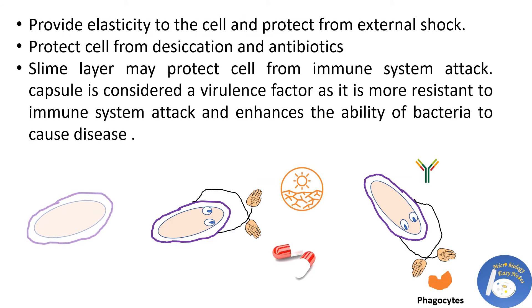The glycocalyx layer provides elasticity to the cell and protects it from external shock, desiccation and antibiotics. The slime layer protects the cell from immune system attack as it can absorb antibodies. The capsule prevents the cell from phagocytosis by making the bacterial surface so smooth and slippery that phagocytic cells cannot engulf the bacterial cell.